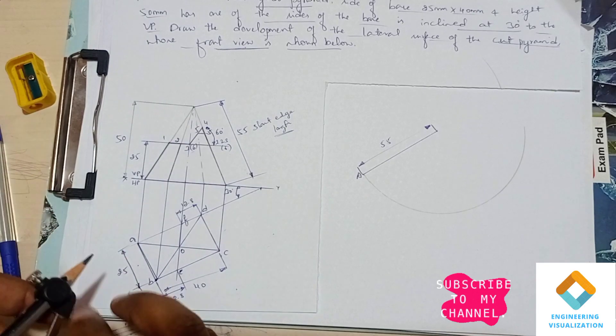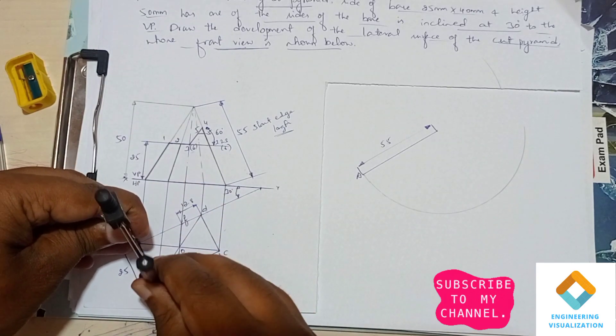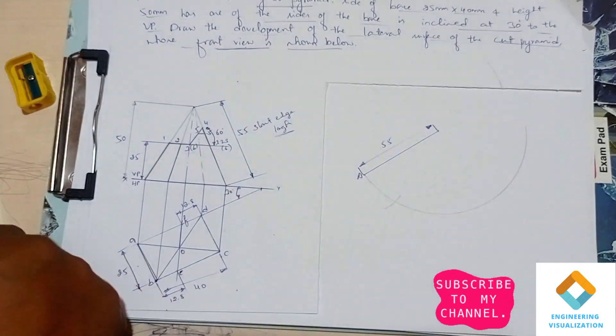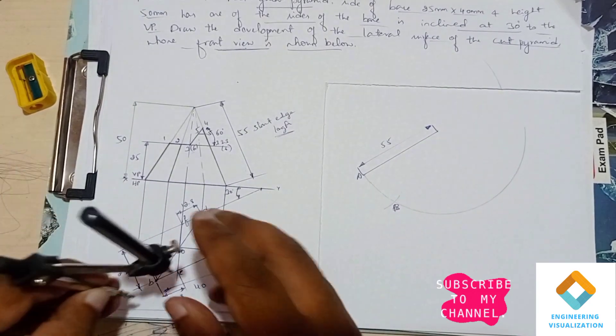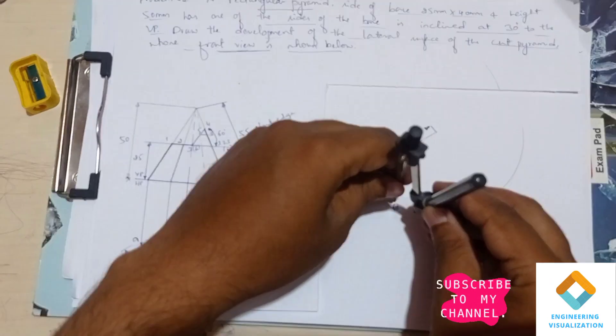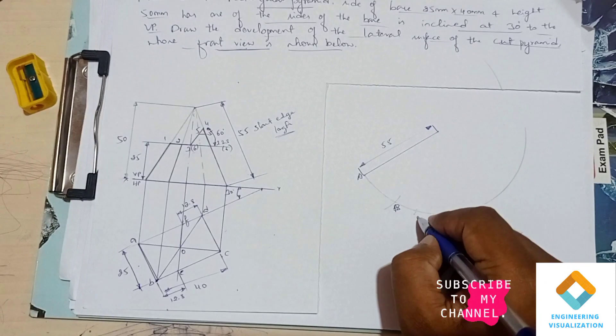Now we have to cut according to this rectangular pyramid. So AB length is 25, I'm measuring from the top view and cut the arc. This is B. Now from B to E, from the diagram B to E is 12.8, so measuring the same length and marking E here.